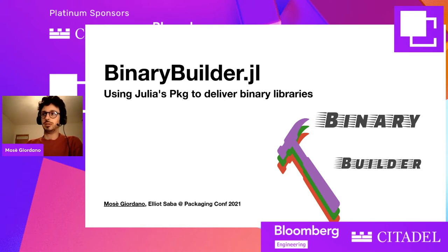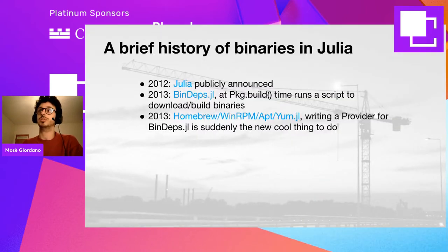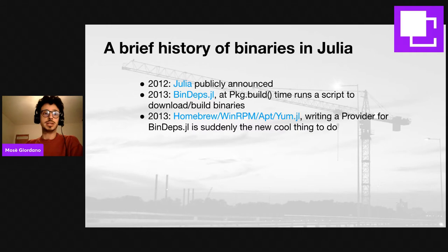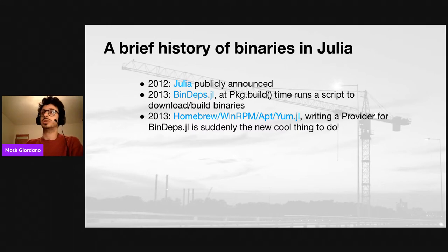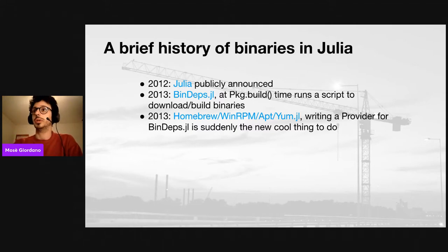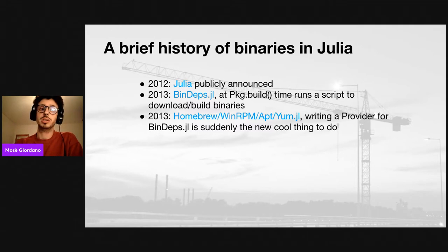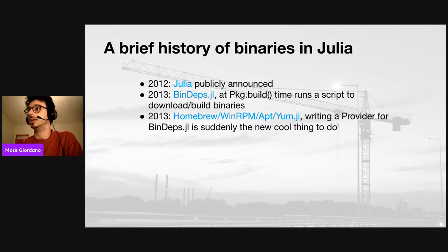Before delving into the details of Binary Builder, I would like to do a brief introduction of the history of binaries in Julia. Julia was publicly announced in 2012. But soon the users realized that they need to sometimes call into libraries from other languages as well. So a package called Bindeps was developed, with providers like Homebrew, WinRPM, APT, or Yum, so you could use the libraries provided by system repositories like for Linux, macOS, or Windows.